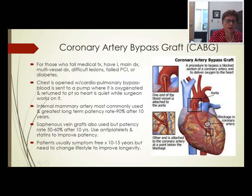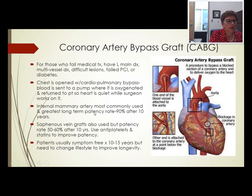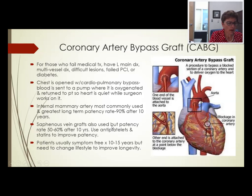The arteries used for bypass: say there's a blockage — they take an artery, usually the internal mammary artery, hook it into the aorta, and bypass the diseased area. The internal mammary artery has a 90% patency rate after 10 years. They also often use saphenous vein grafts, with patency of only 50 to 60 percent after 10 years. Patients use antiplatelets and statin drugs to improve that record.